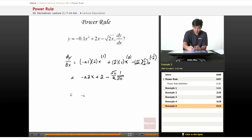And if we rewrite this a little bit, negative 0.2x minus square root of 2 over 2 square root of x plus 2 is our derivative of this expression.